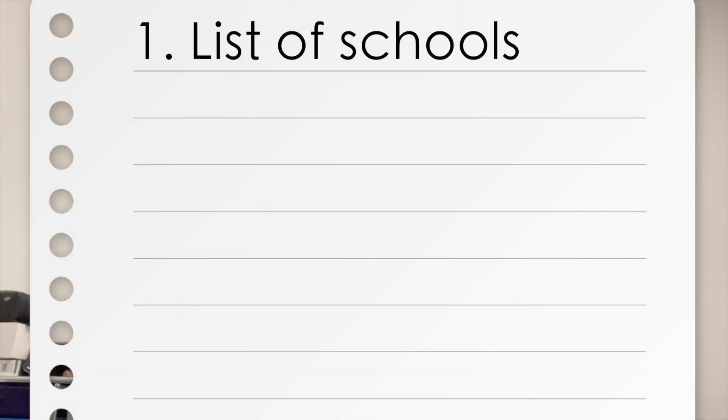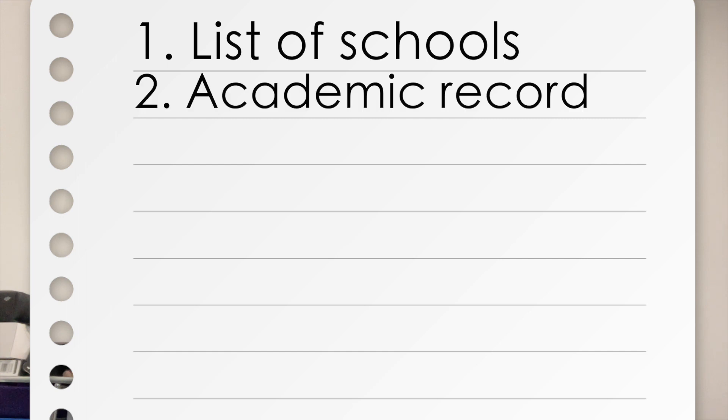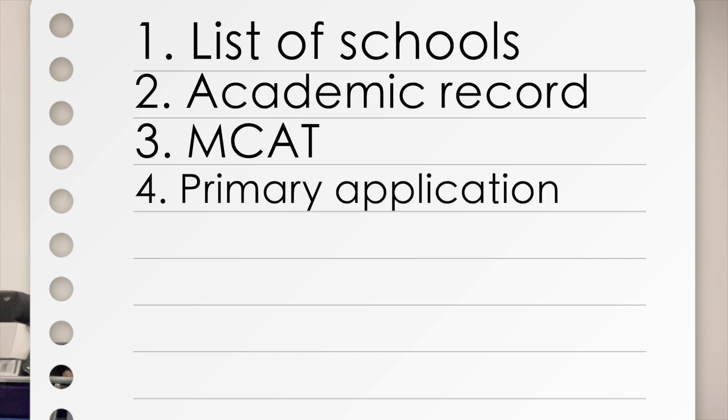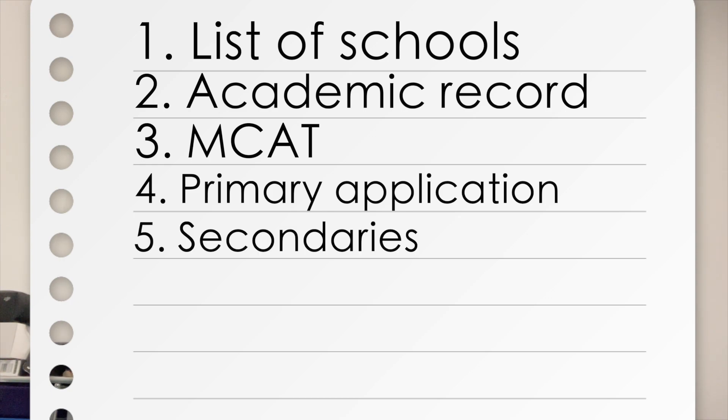These include the schools you want to apply to, your academic record, your MCAT, your primary application — which has your personal statement and letters of recommendation — your secondaries, and finally, the interview. If you don't know what some of these words mean, don't worry at all. We're going to cover everything in this video, and we'll also be going over timelines in terms of when to do certain things near the end. This will really help put everything into perspective.